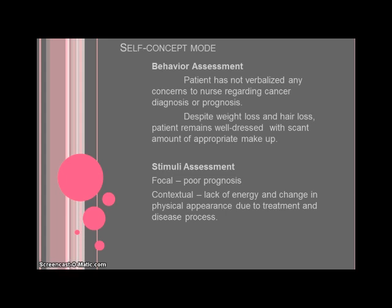Let's move on to the self-concept mode, starting with the behavior assessment. She has not verbalized any concerns to the nurse regarding her cancer or prognosis. Despite her weight loss and hair loss, she remains well dressed, wearing street clothes as much as possible, always has on a little makeup, and actually has a healthy glow despite her illness. The main focal stimuli here is that she has a poor prognosis, which has a very real impact on self-concept. Contextual stimuli is the lack of energy and change in physical appearance due to both the disease process and treatments.